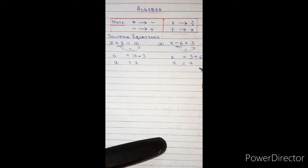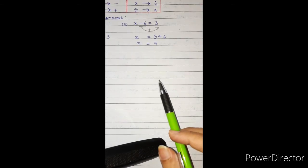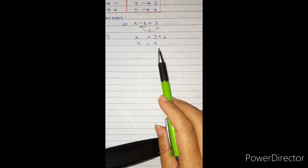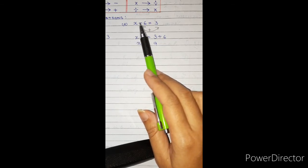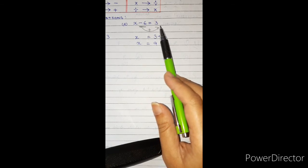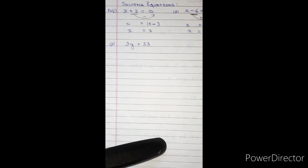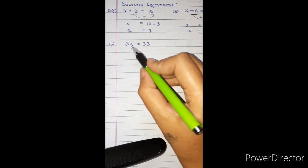So x is equal to 9. Let us check: if we put 9 in place of x, then 9 − 6 = 3. Yes, it is correct.